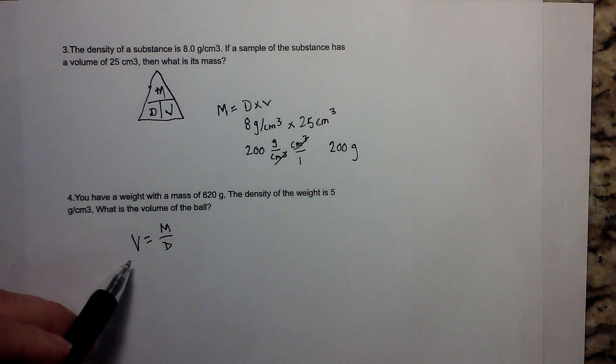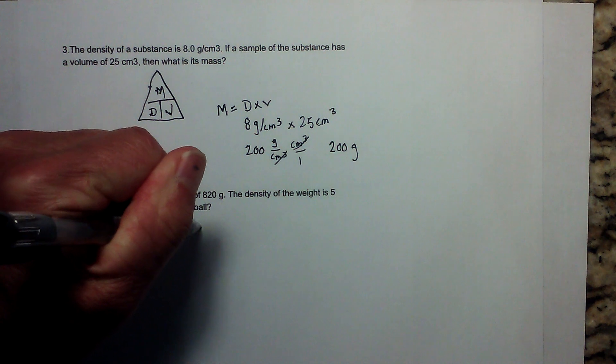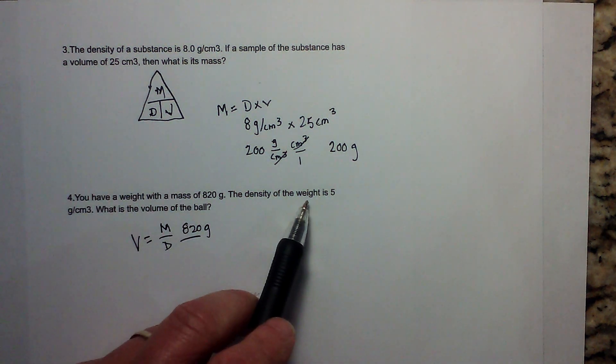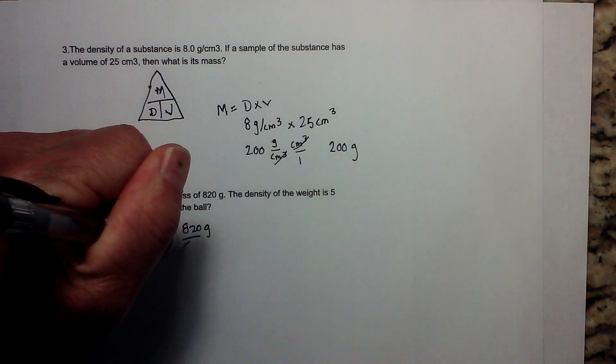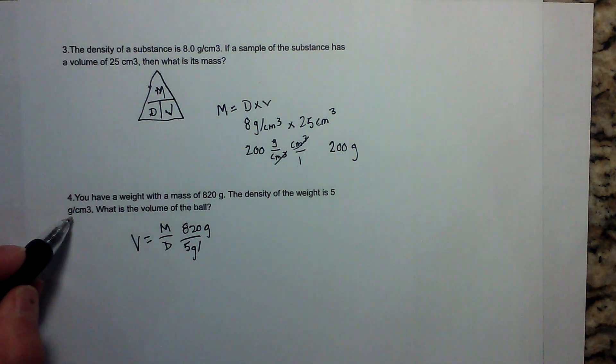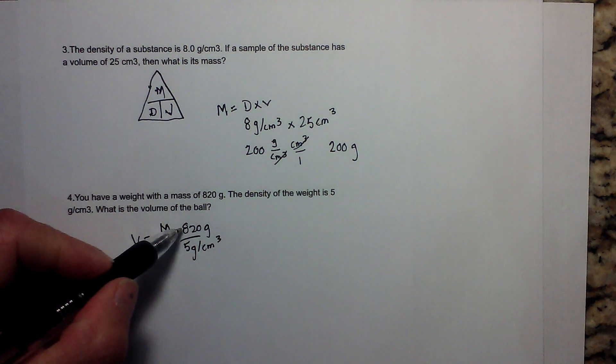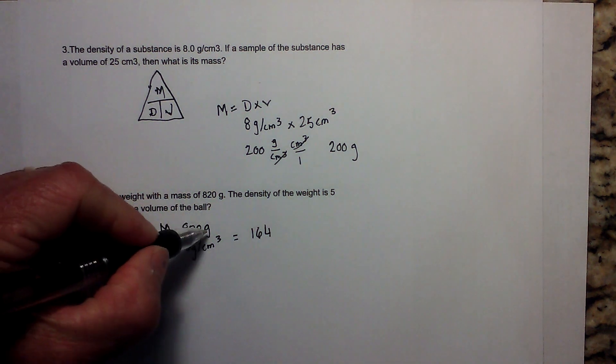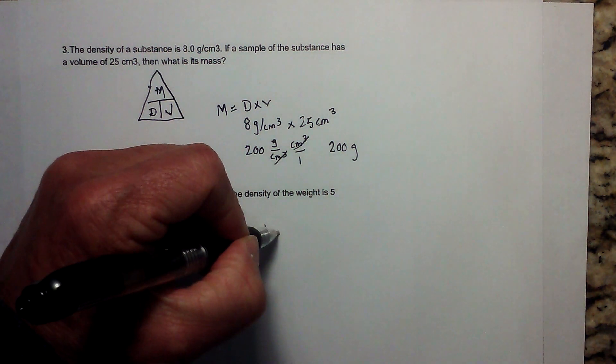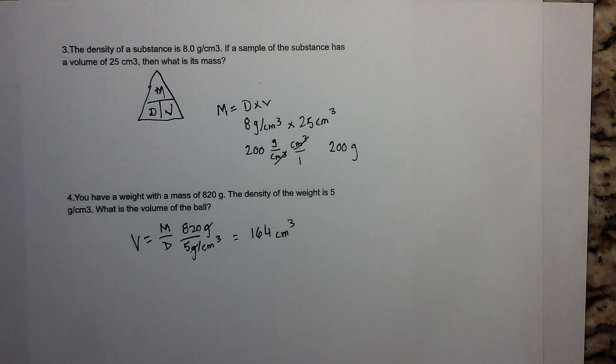Let's just plug in the numbers. I have a mass of 820 grams. I have a density of 5 grams per centimeters cubed. When I divide 820 by 5 that equals 164. The grams cancel and I'm left with centimeters cubed, so the volume is 164 centimeters cubed.